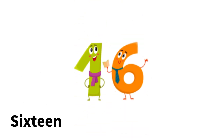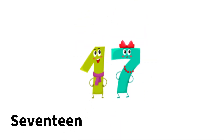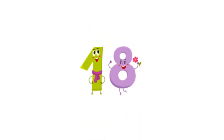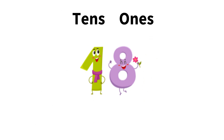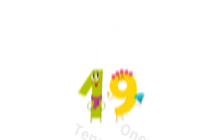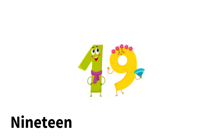After fifteen comes sixteen — one-six, sixteen. Then we have seventeen — one-seven, one ten and seven ones, seventeen. Then we have one-eight — one group of ten and eight groups of ones — that's eighteen.